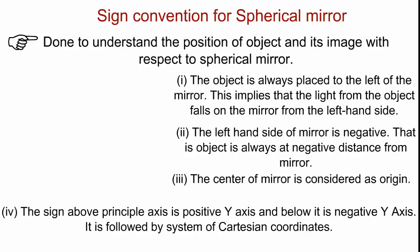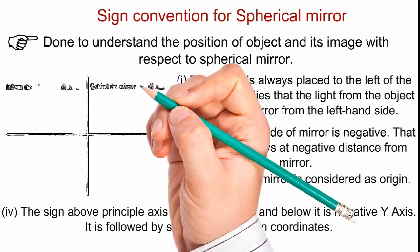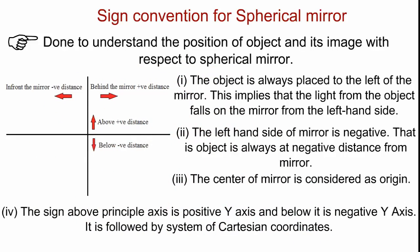The left is negative x-axis and behind the mirror is positive x-axis. The center of mirror is considered as origin. The sign above principal axis is positive y-axis and below is negative y-axis. It is similar to the cartesian coordinate system that you have studied in mathematics. For better review of sign convention, you can go through this image.